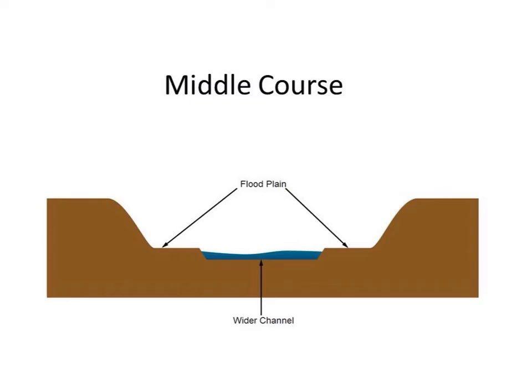As you go down the river to the middle course, you can see that the river has become somewhat wider. The river has started to erode the steep valley sides to create what we call flood plains — flat areas of land either side of the river channel. The place where the flood plain ends and the valley sides start to rise again is known as the bluff line.